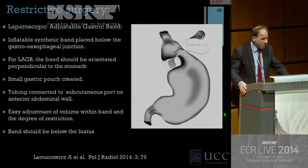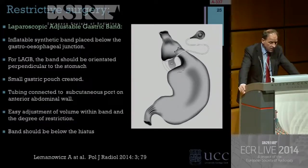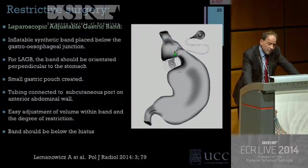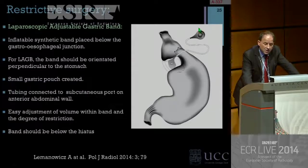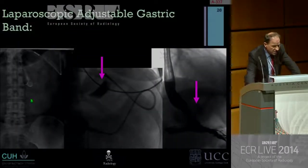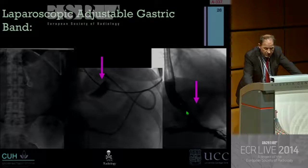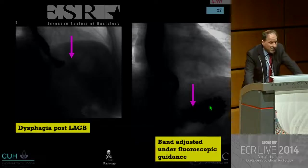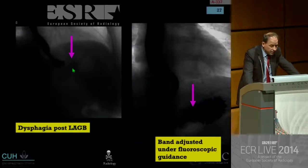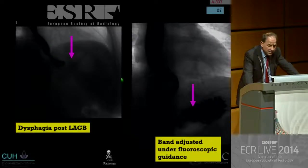We see more and more patients in Cork returning after laparoscopic adjustable band surgery. A prosthetic device is placed in the proximal stomach just beyond the gastroesophageal junction, creating a small pouch above it. The synthetic band connects via plastic tubing to a port in the anterior abdominal wall, allowing adjustment to cause greater or lesser degrees of constriction. On imaging you see the port and tubing; on barium you see the esophagus, stomach, the small pouch, and the restrictive band. One patient had severe dysphagia and barium couldn't pass — we adjusted it under fluoroscopic guidance and achieved good contrast flow into the stomach.